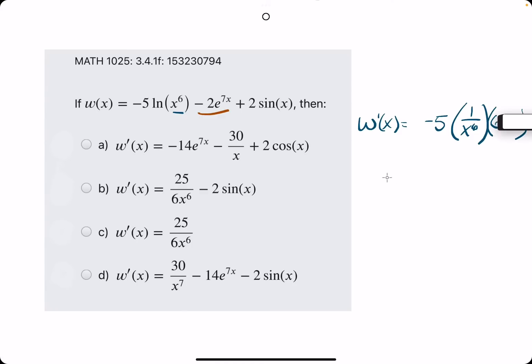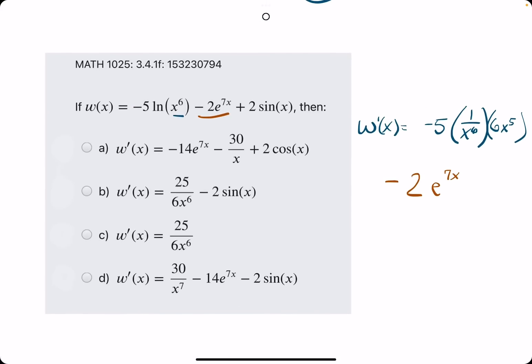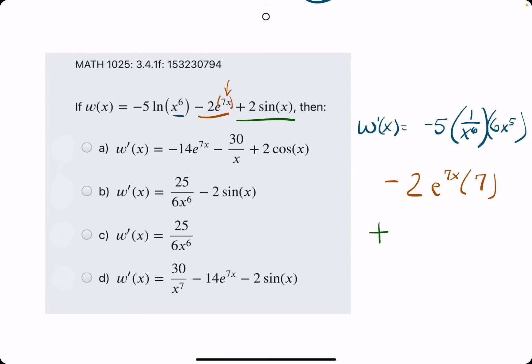And then, the second term will be minus 2. We keep the coefficient. E to the something stays exactly the same. But we do have to multiply by the derivative of the inside layer, which is 7x. So, the inside layer is 7x. Its derivative is 7. And then, the third term, plus 2x. We keep the plus 2, or sorry, plus 2 sine of x. We keep the plus 2. Sine of x goes to cosine of x. And we are done.